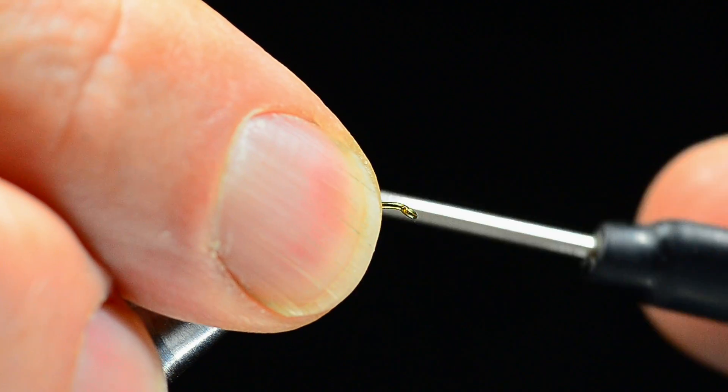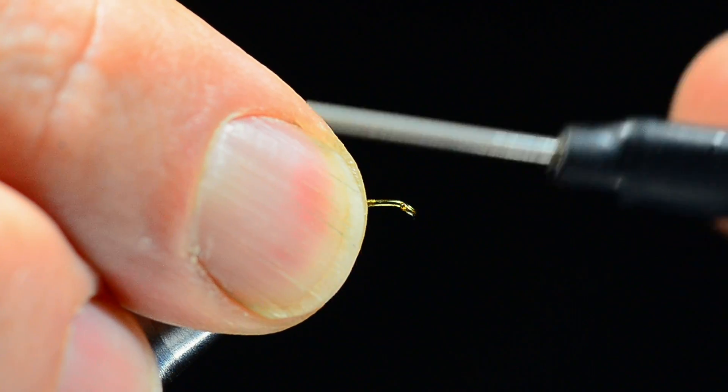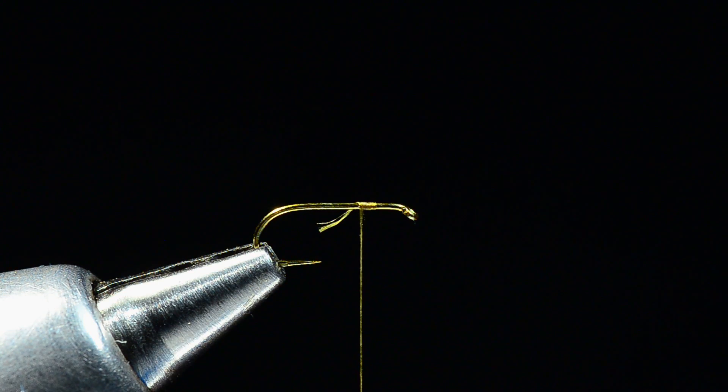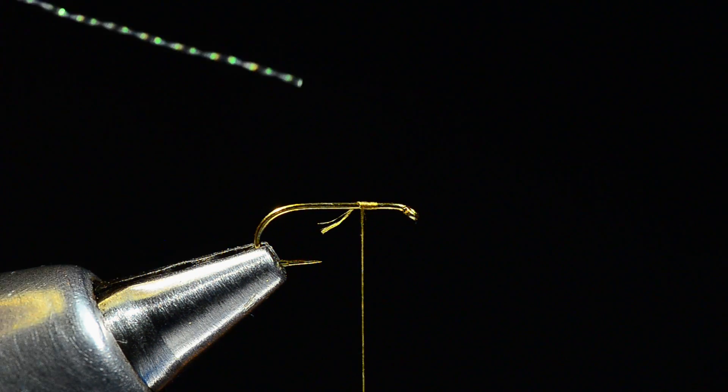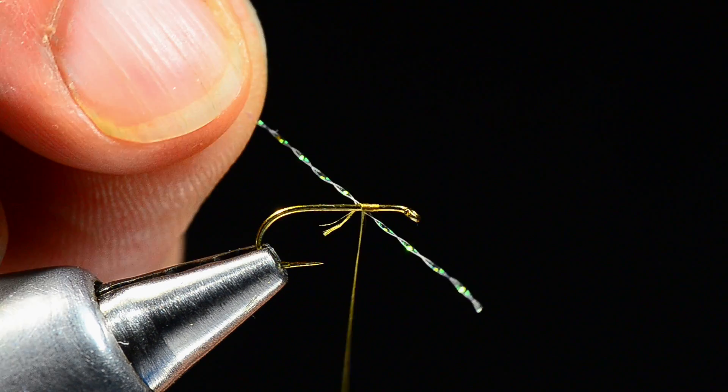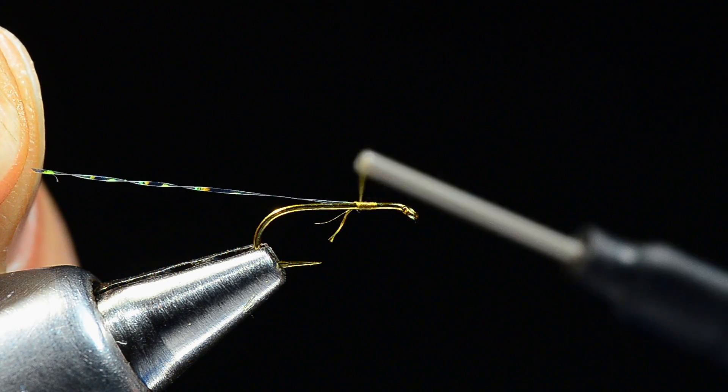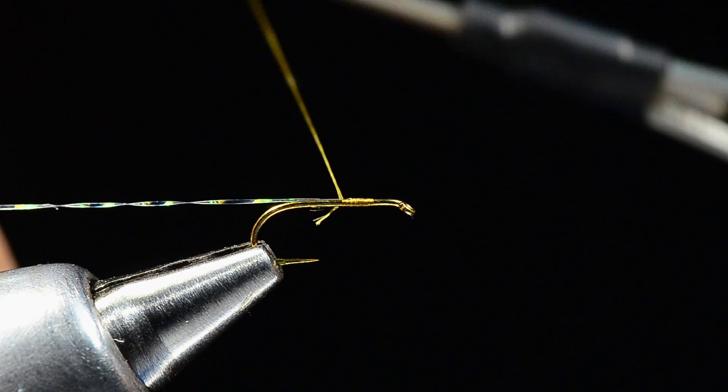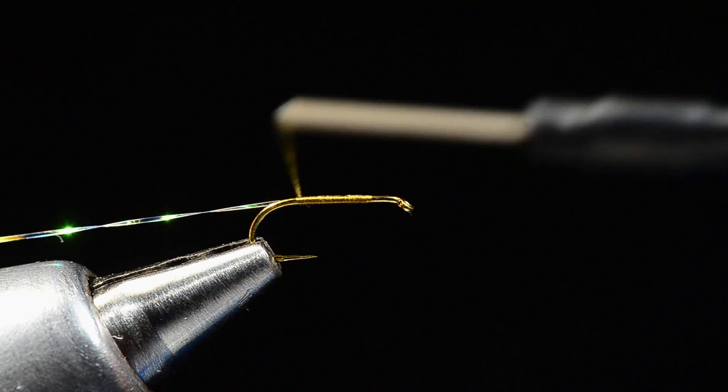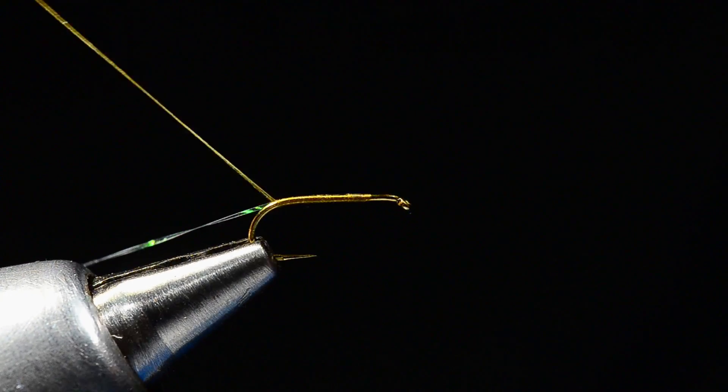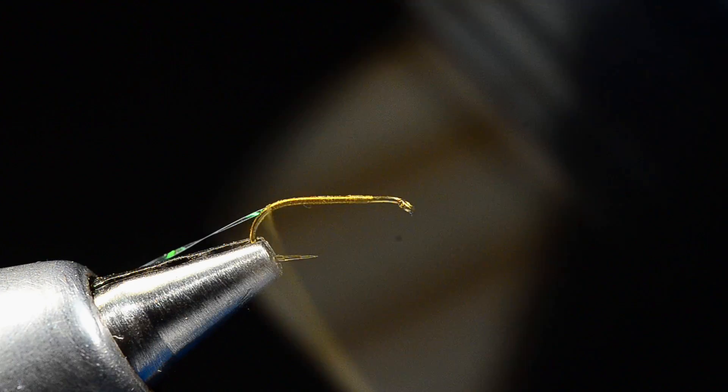I'm going to start it about maybe three hook eye lengths back from the eye and just get a jam knot on there. Then I'm going to take a piece of pearl crystal flash and catch that and tie it in along my near side of the hook. I'm going to wrap back over the tag end of the thread and the crystal flash all the way back even down around the bend just a little bit here.